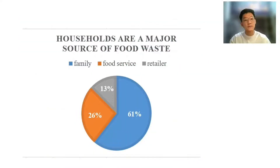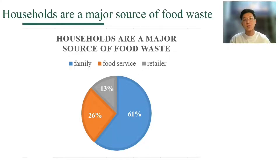The three main sources of food waste are households, food service, and food sales, with households being the most important source of food waste — about 61% of food waste occurs in daily household settings, amounting to 11% of the total food available to consumers worldwide.